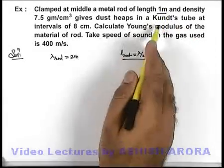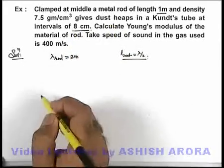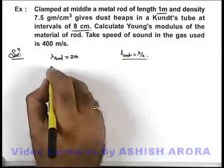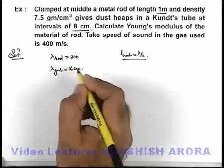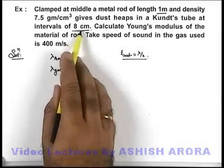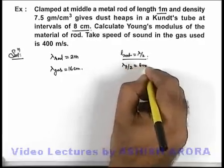And it is given that dust heaps are at an interval of 8 centimeter, so we can say wavelength of sound in the gas is 16 centimeter, because the loop length is given as 8 centimeter, lambda of gas by 2 is 8 centimeter.